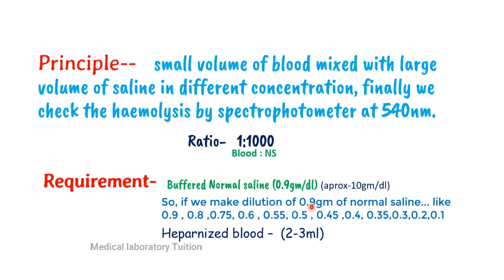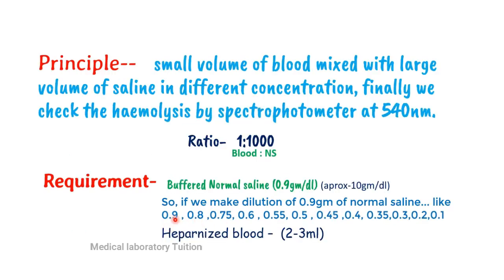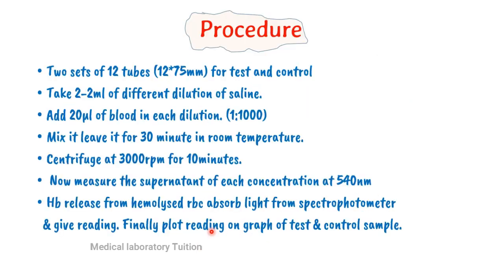We require buffered normal saline so that pH is maintained at 7.4. Saline is 0.9 gram per deciliter — we say 10 gram per deciliter for easy calculation. We make dilutions of normal saline from 0.9 gram, then 0.8, 0.75, 0.6, and so on, up to 12 dilutions. We take heparinized blood, 2 to 3 ml. We cannot use EDTA, citrate, or oxalate because they contain salt and may affect the result. EDTA is known to increase fragility of normal RBCs.